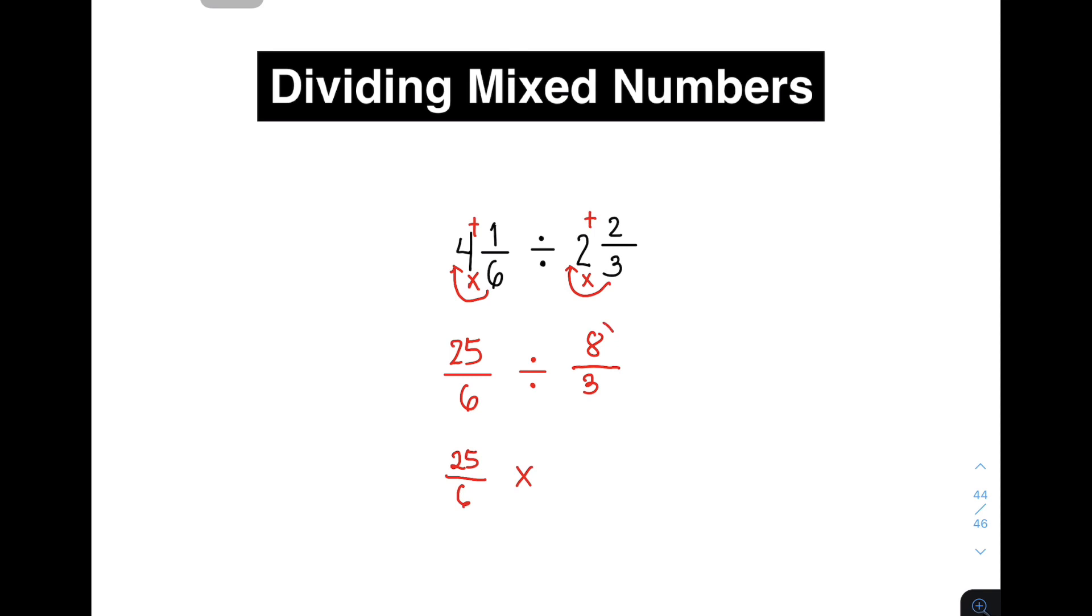And then yung ating next fraction which is 8 over 3, yung ating divisor, kulin natin yung kanyang reciprocal. Meaning, mag-i-interchange yung position ng numerator at denominator. So it will become 3 over 8. Ayun yung gagawin natin.